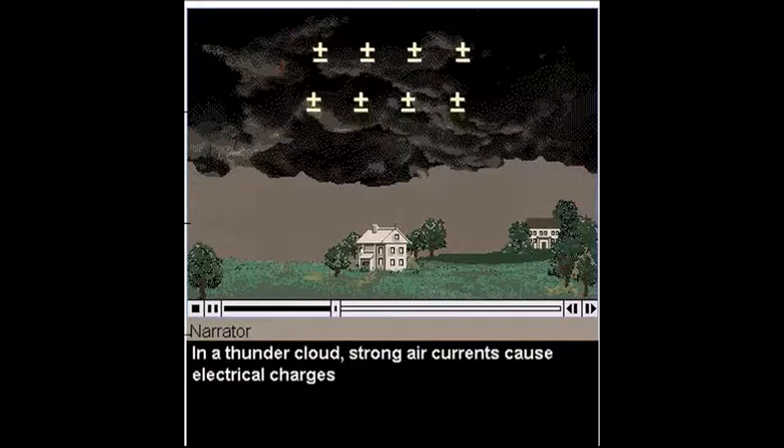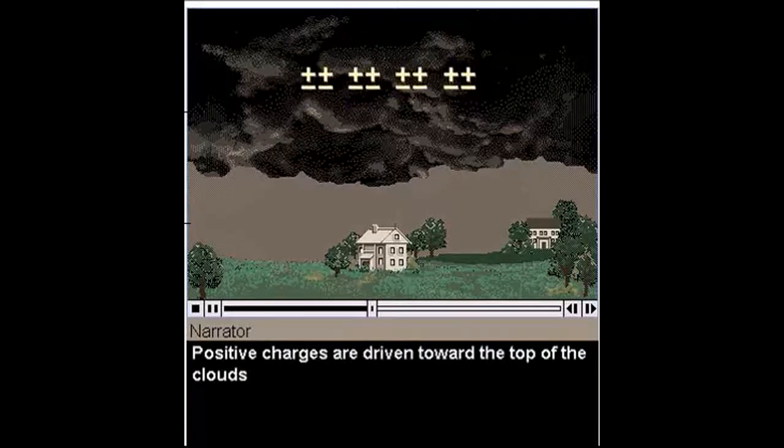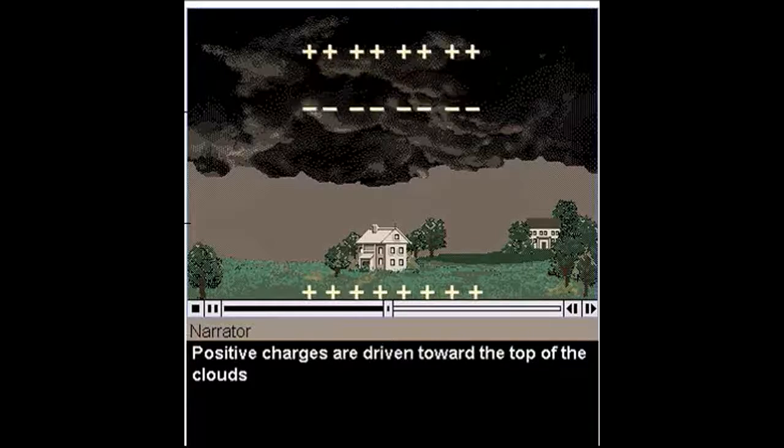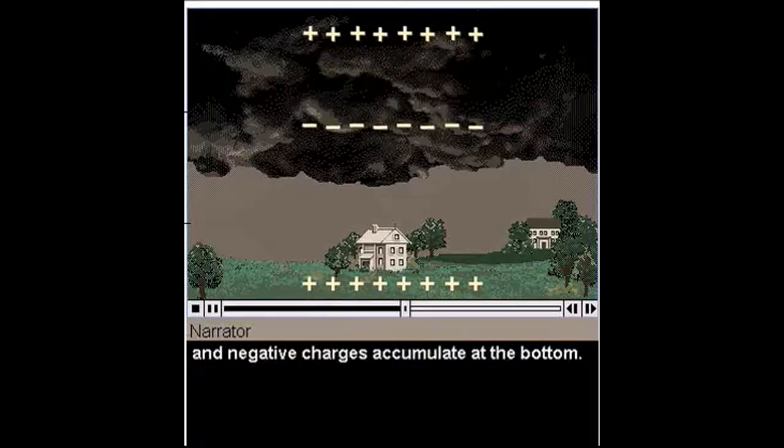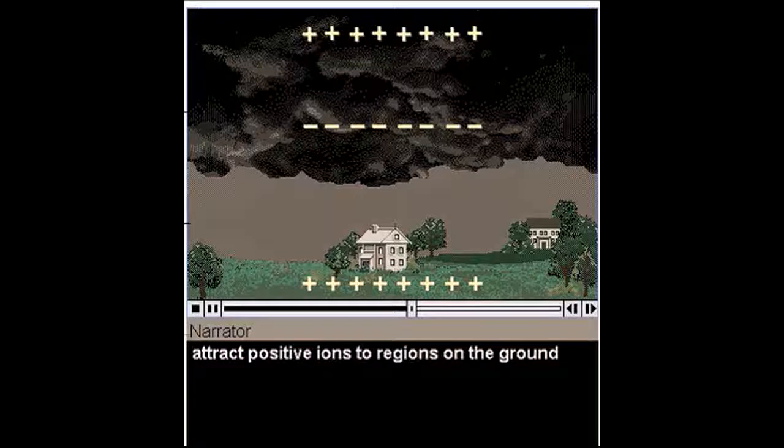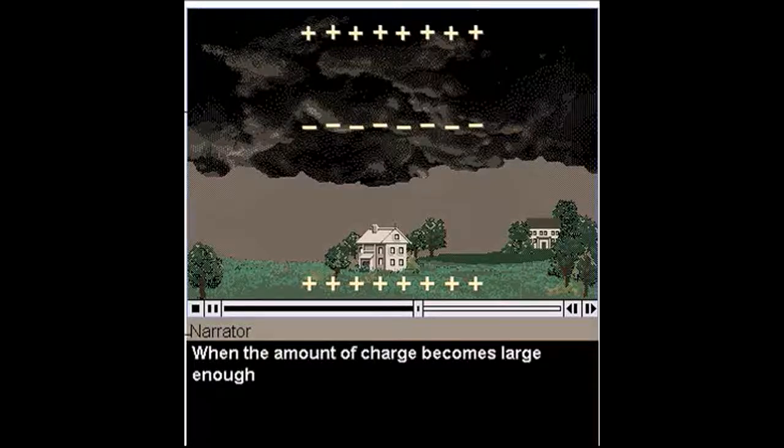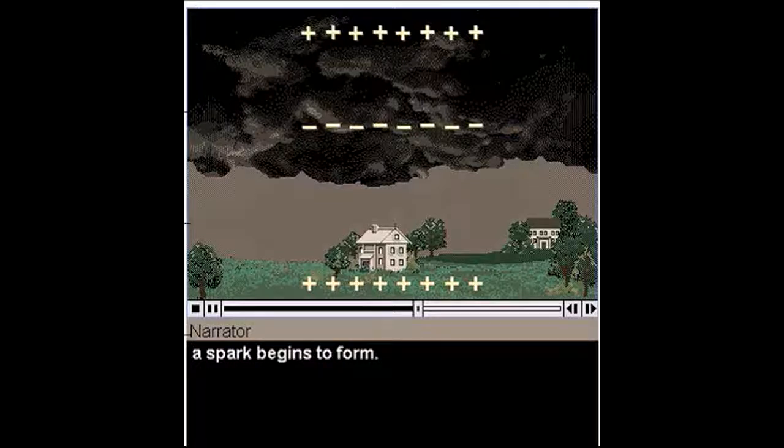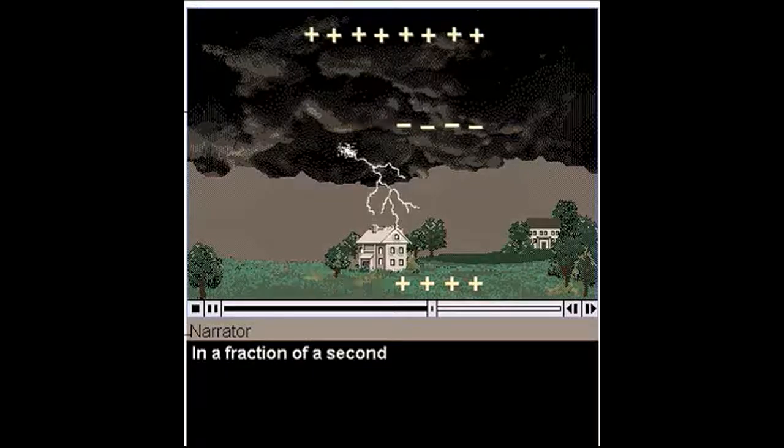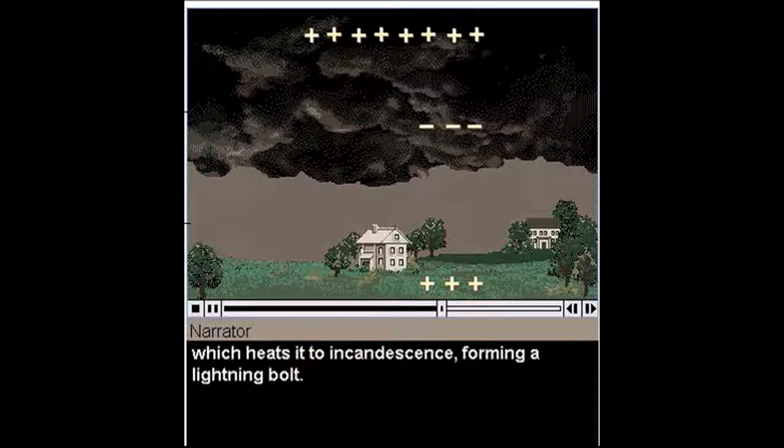In a thundercloud, strong air currents cause electrical charges to separate from one another. Positive charges are driven toward the top of the cloud, and negative charges accumulate at the bottom. The negative charges, or ions at the base of the cloud, attract positive ions to regions on the ground, beneath the cloud. When the amount of charge becomes large enough, a spark begins to form. In a fraction of a second, a tremendous amount of electricity flows through the air, which heats it to incandescence, forming a lightning bolt.